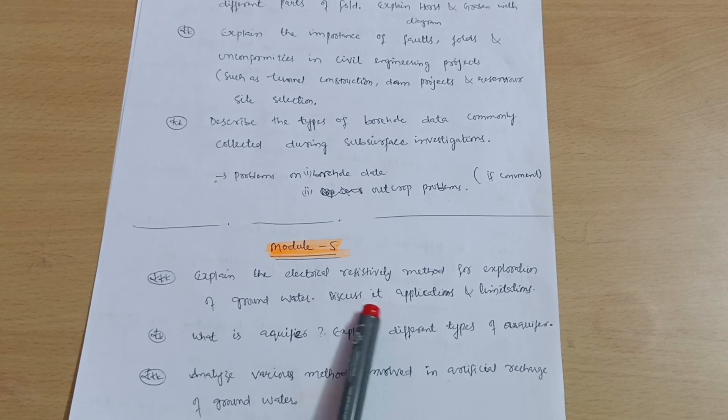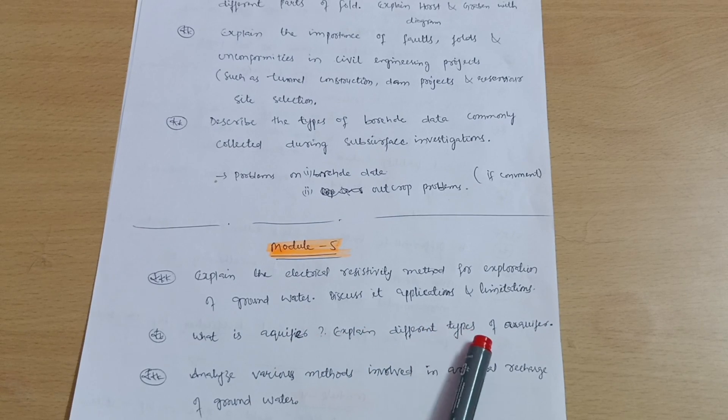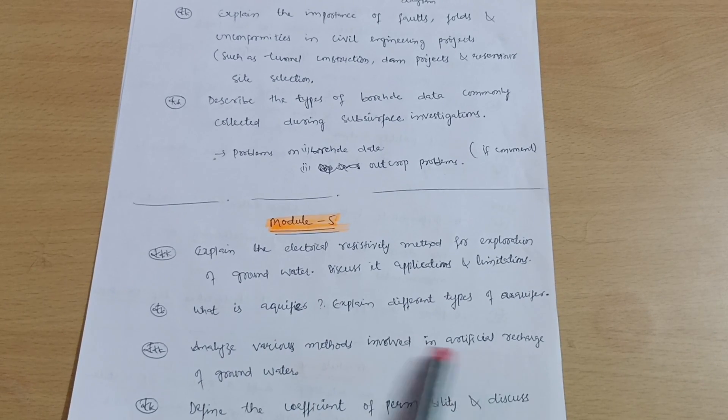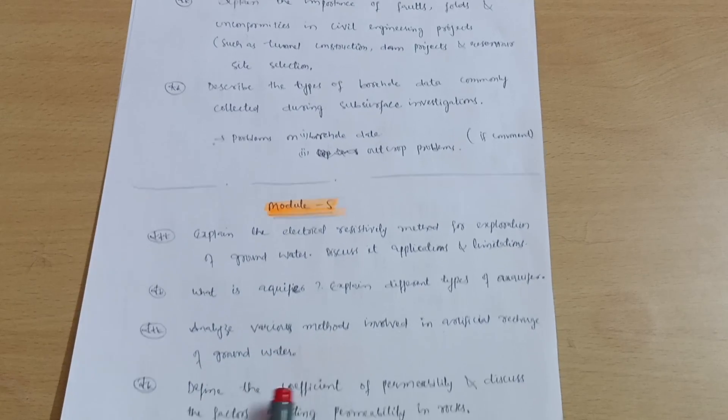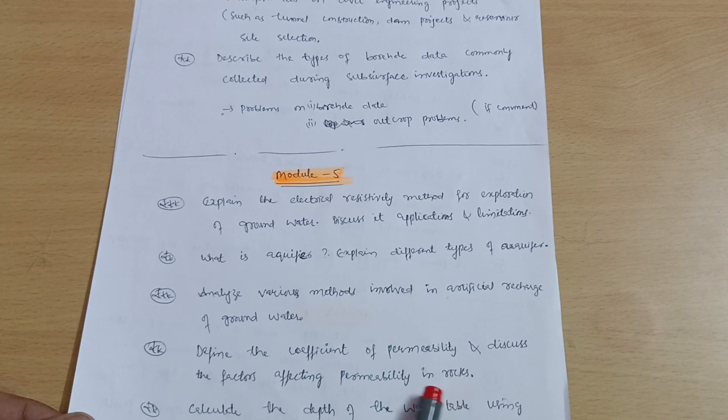Module 5: Explain the electrical resistivity method for exploration of groundwater. This is the super important question. Discuss its applications and limitations. What is aquifer? Explain different types of aquifer and analyze various methods involved in the artificial recharge of groundwater. Define the coefficient of permeability and discuss the factors affecting permeability in rocks.